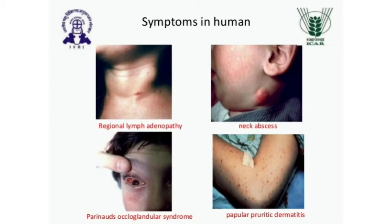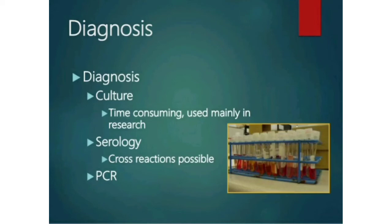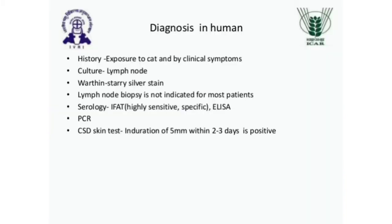Now let us learn about the diagnosis of cat scratch disease. First, culture can be done but it is time-consuming and mainly used in research. Another way is serology, though cross-reactions are possible. PCR is a very good way to diagnose cat scratch disease. For diagnosis in humans, we first take the patient's history — whether they have been exposed to a cat, scratched or bitten by a cat, or had cat saliva enter a wound.